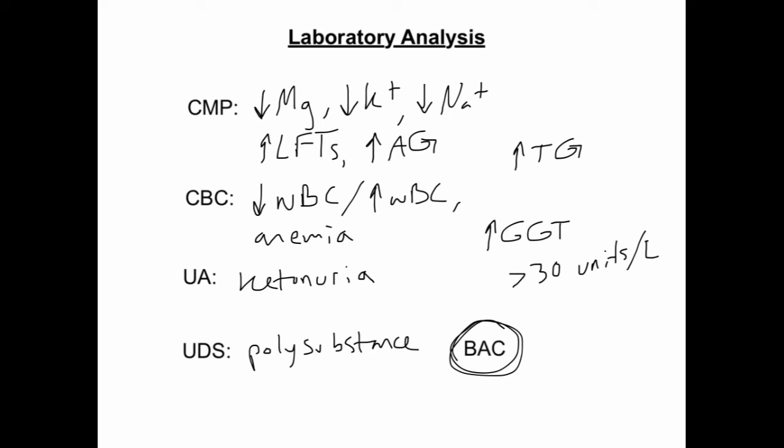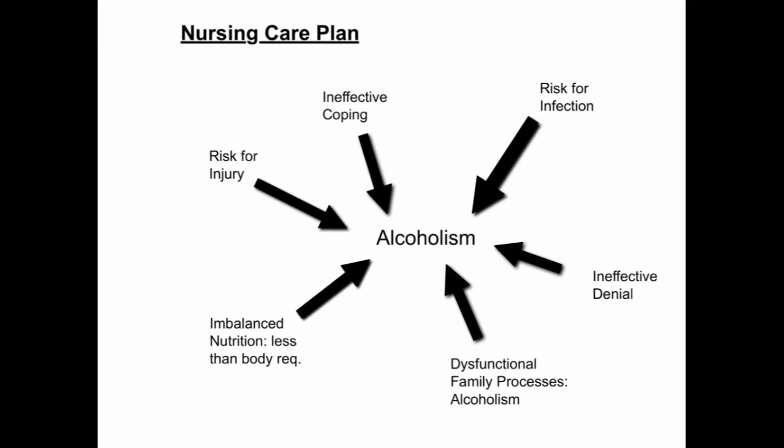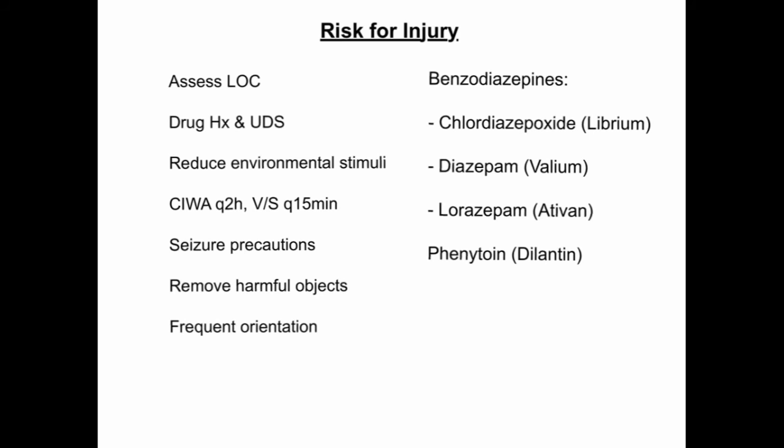Nursing diagnoses for the alcoholic patient may include risk for injury, ineffective coping, risk for infection, ineffective denial, dysfunctional family processes, and imbalanced nutrition less than body requirements. For risk for injury, assess the level of disorientation to determine safety requirements, obtain a drug history and urine drug screen, maintain a quiet environment with reduced stimuli to prevent agitation, and observe behaviors frequently — for instance, doing a CIWA scale every two hours and vital signs every 15 minutes initially, or one-on-one therapy.